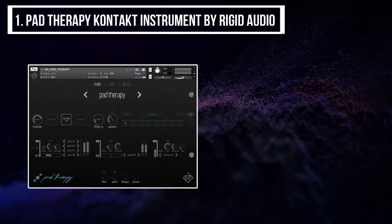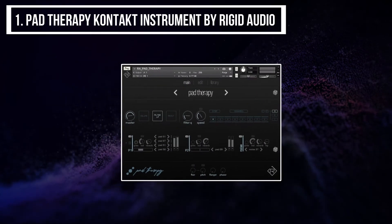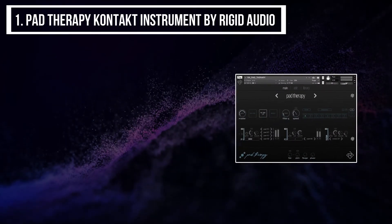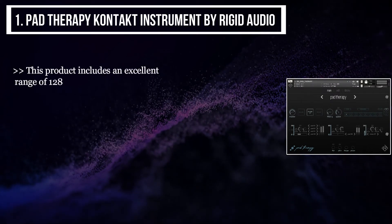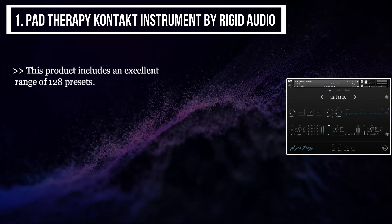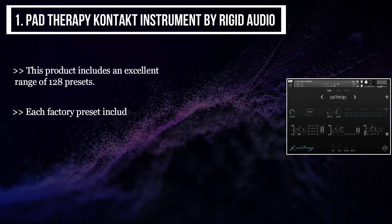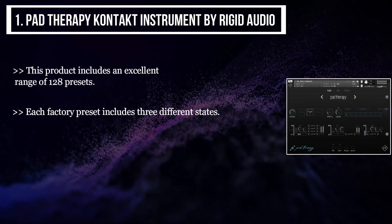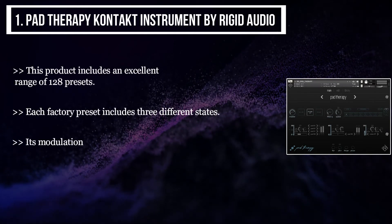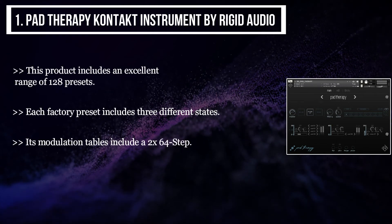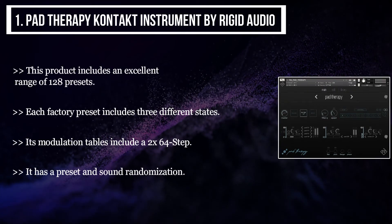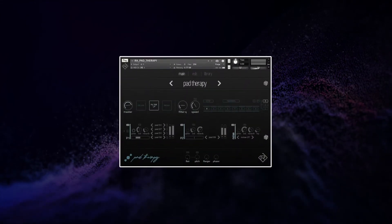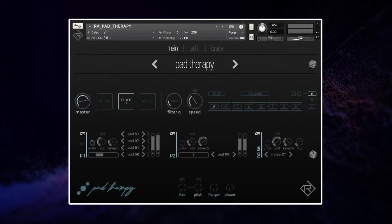The final product we have is the Pad Therapy Kontakt Instrument by Rigid Audio. This product includes an excellent range of 128 presets. Each factory preset includes three different states. Its modulation tables include a 2x64 step sequencer, and it has preset and sound randomization.